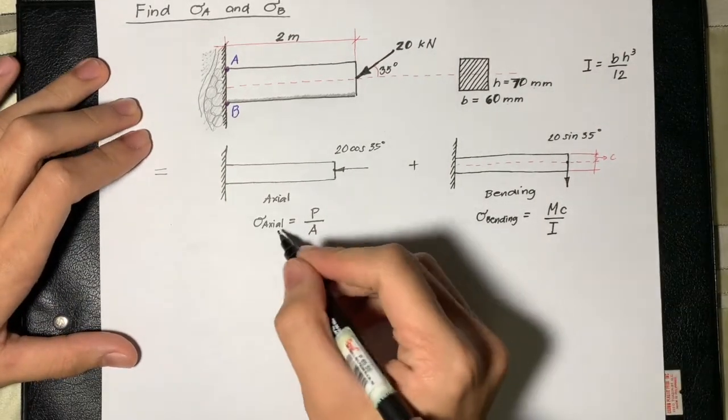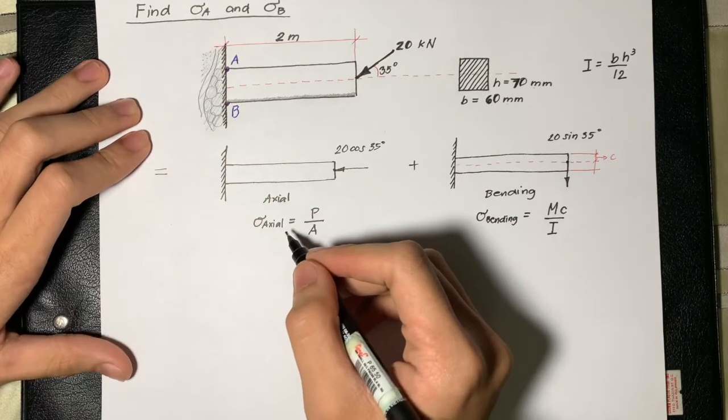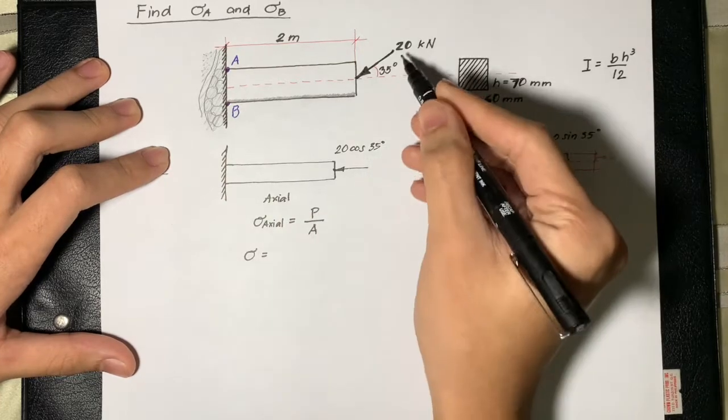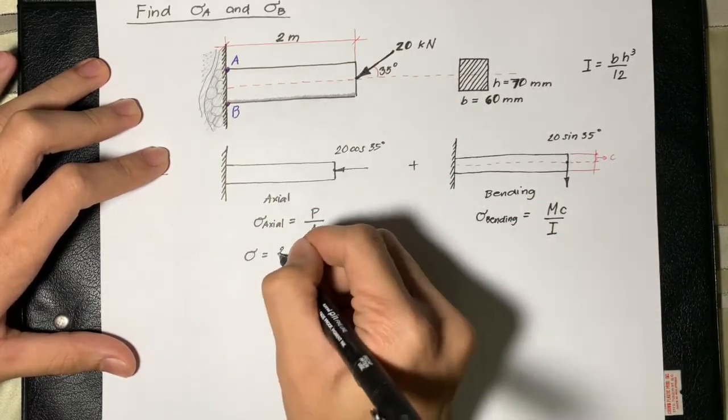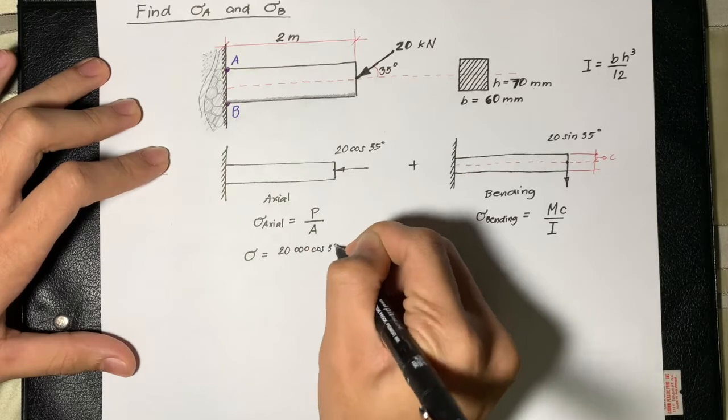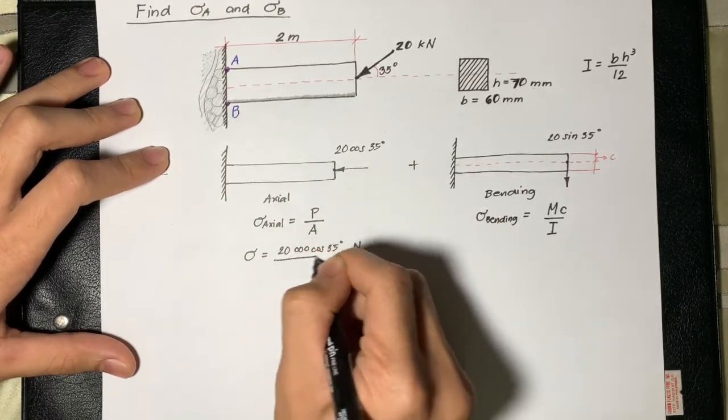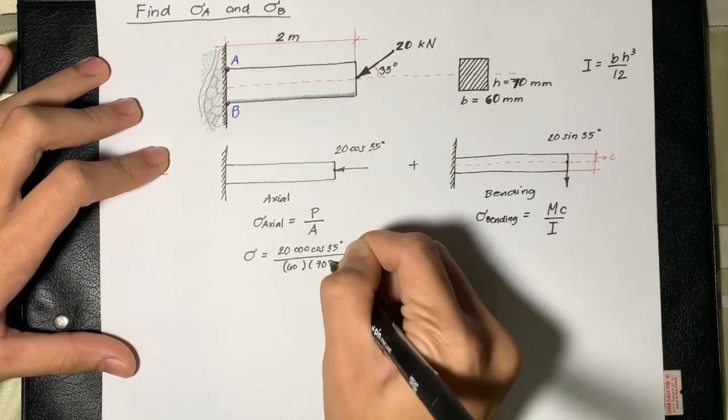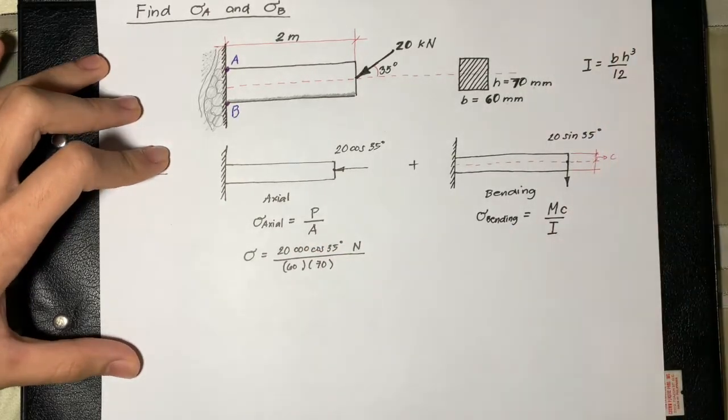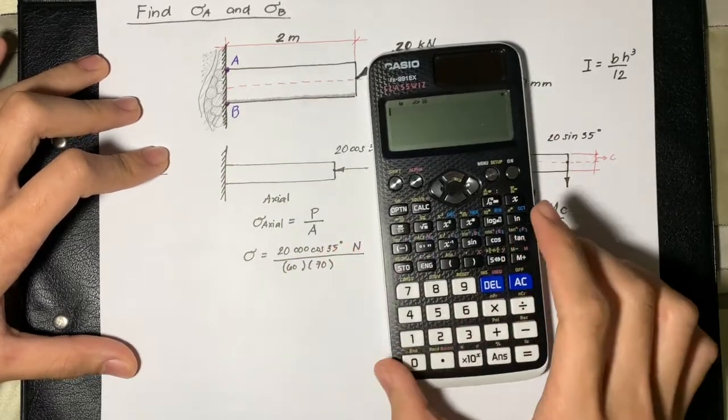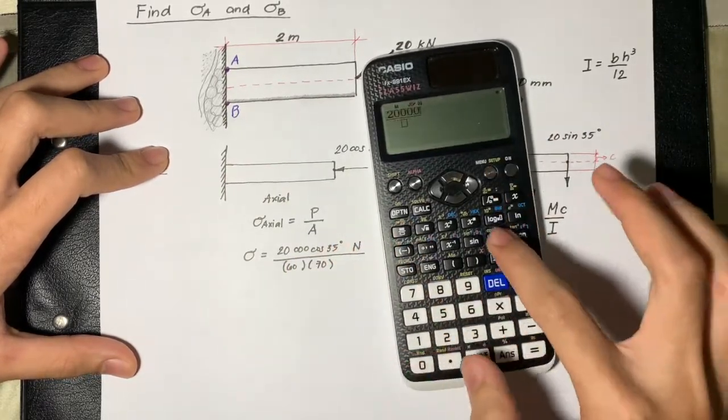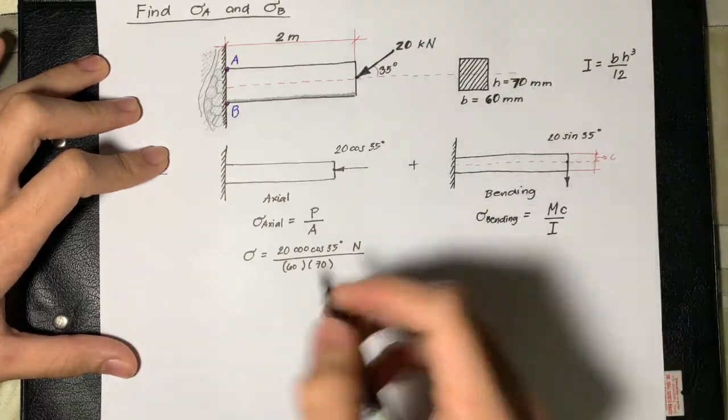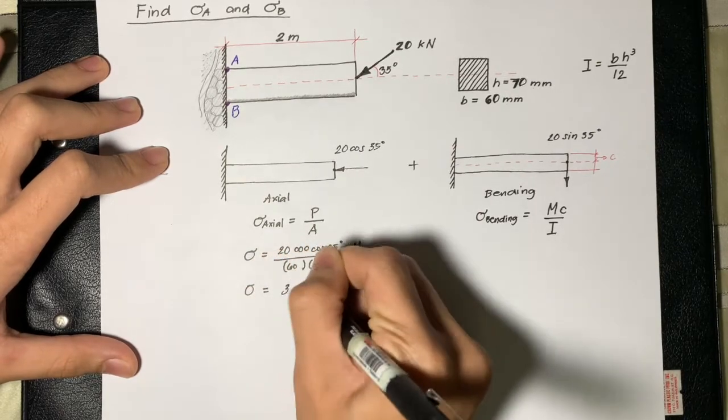Solving for the axial stress, we have 20 kN cosine 35 degrees, all over 60 times 70, which is the area of the cross-sectional area. Solving with the calculator, we get 3.9 MPa.